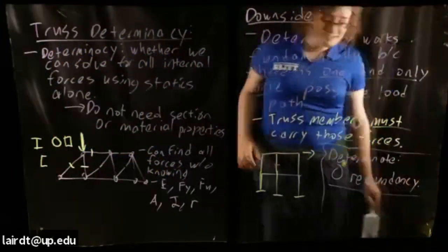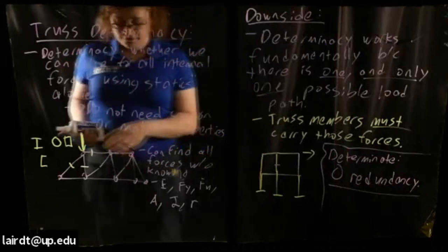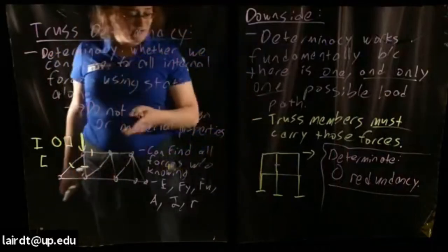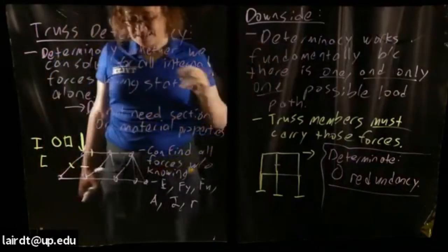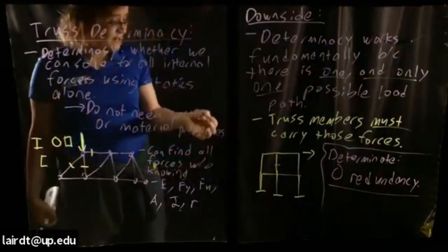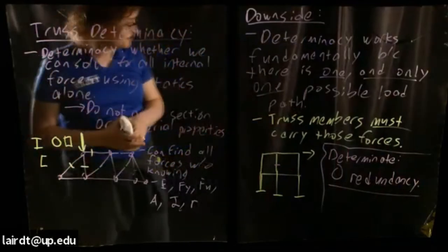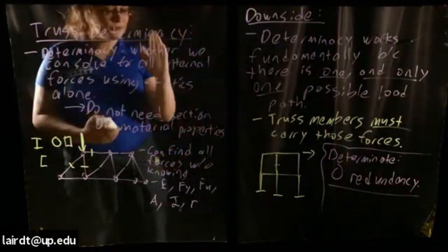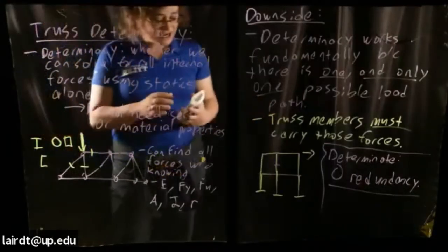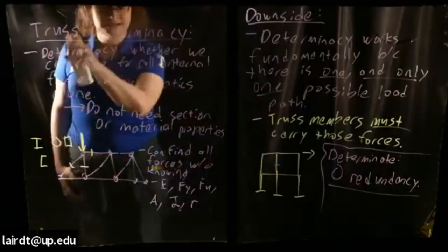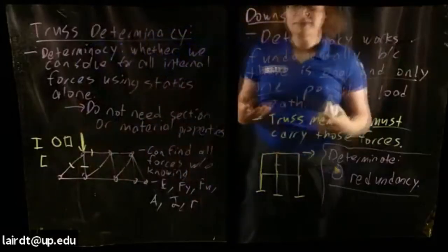The benefits of statically determinate structures are that they are relatively simple to design and can be highly efficient. Having only one load path means you can really optimize your structural elements because you know exactly what force every member is going to carry. But while you end up with a very efficient structure, if you design a truly determinate structure, you end up with one with no redundancy. If any element fails, the entire thing is coming down — something we tend to avoid as structural engineers.